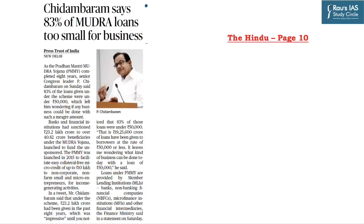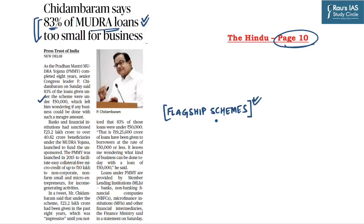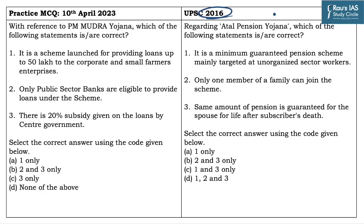The next question is based on news from page 10 of The Hindu, which talks about Mudra loans. A senior Congress leader stated that 83% of Mudra loans under the Pradhan Mantri Mudra Yojana were under ₹50,000. Although the news context isn't directly important, flagship schemes are important for UPSC Prelims. In 2016, UPSC asked about Atal Pension Yojana — three statements were given and you need to identify the correct ones. You can pause the video and try.